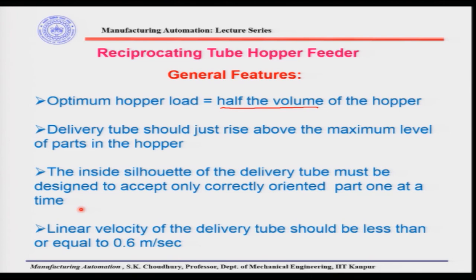Another advantage of this device is that if the inside silhouette is made exactly according to the shape, size, and accuracy of the part, it can also serve as an inspection device. Only parts that are dimensionally correct will come through. Parts whose tolerances are not right will not be able to go inside the silhouette. Many feeders are actually designed this way so that they can be considered as inspection devices as well.